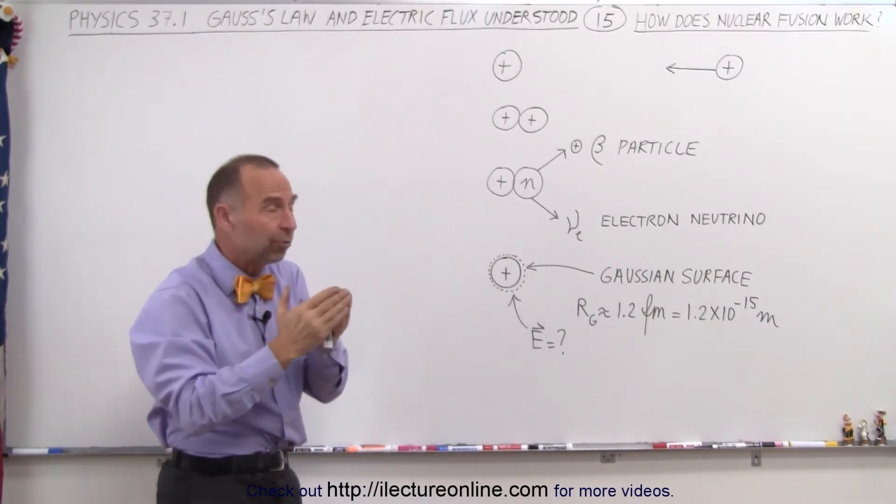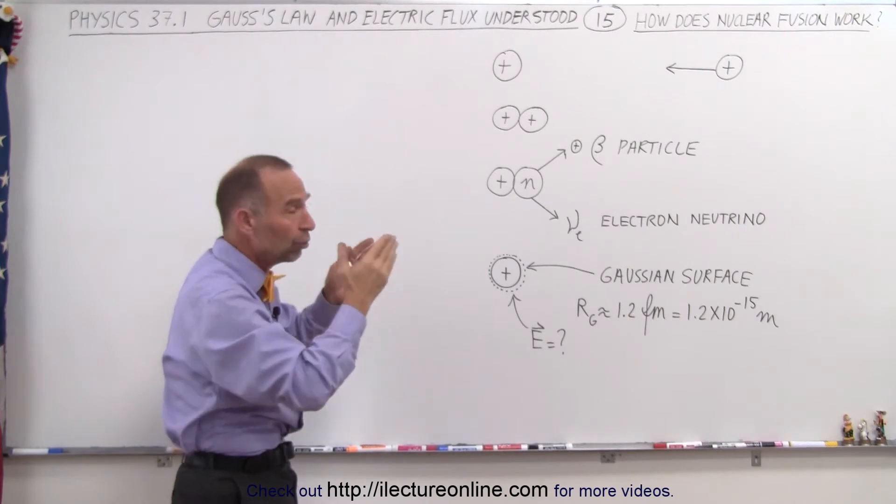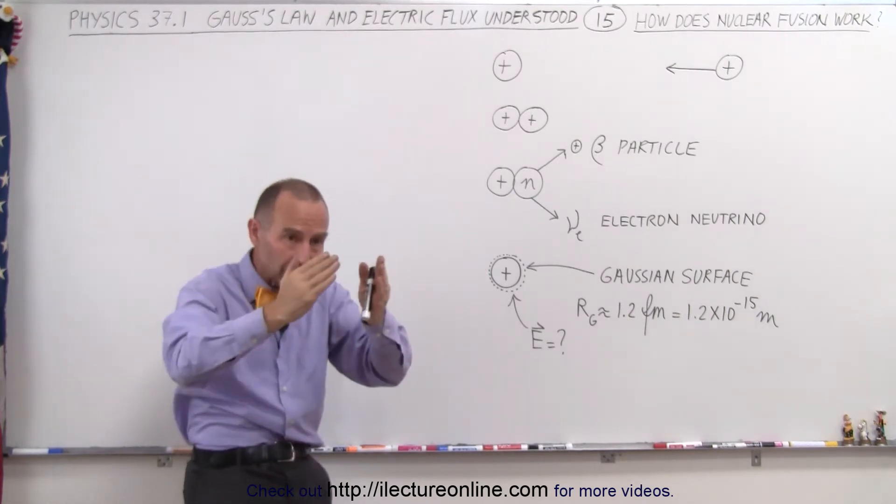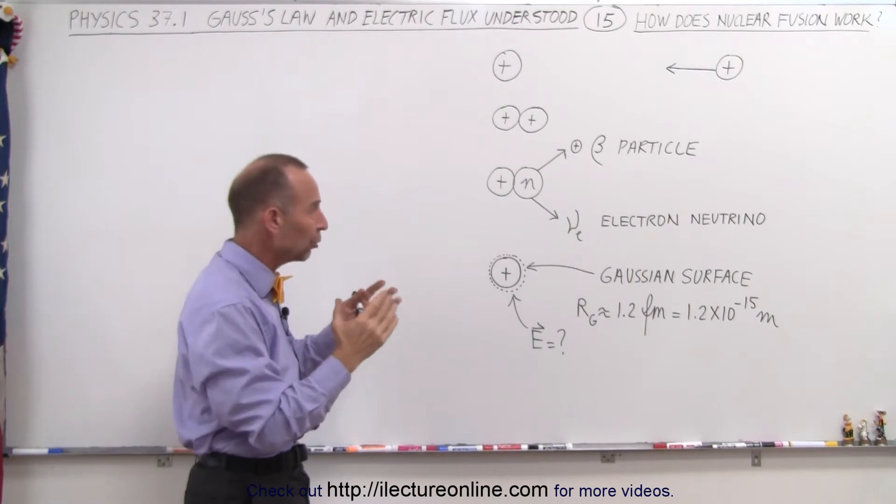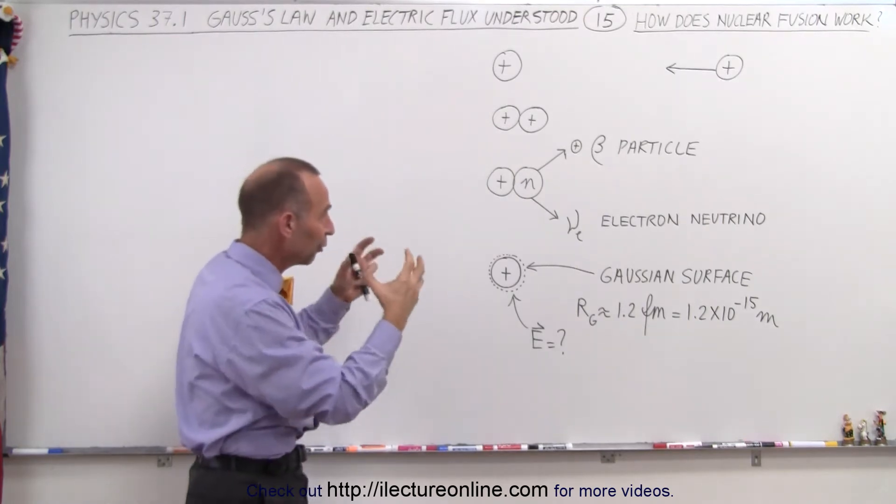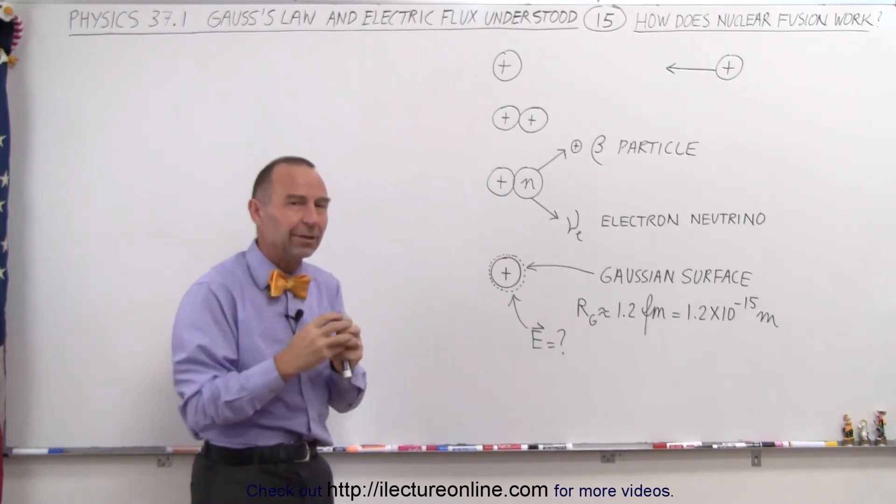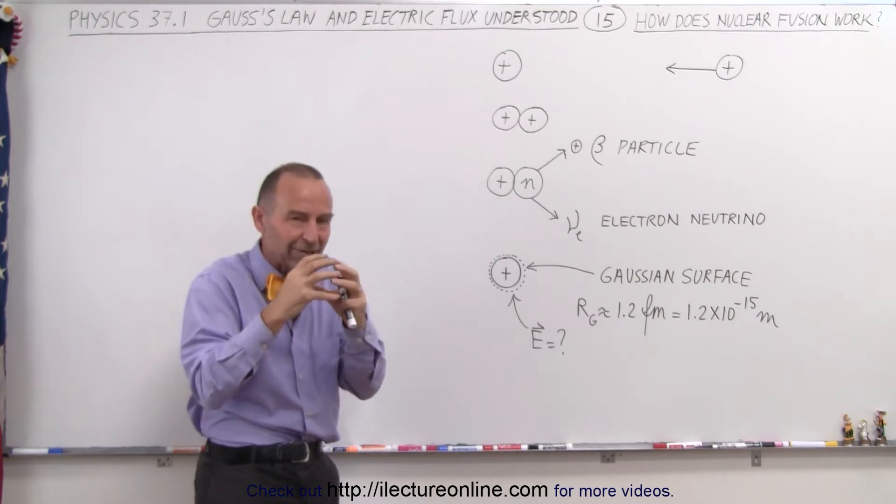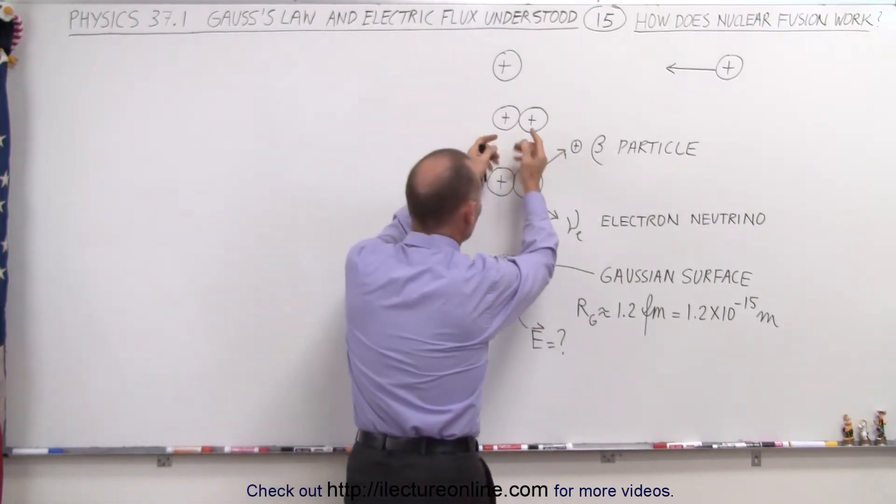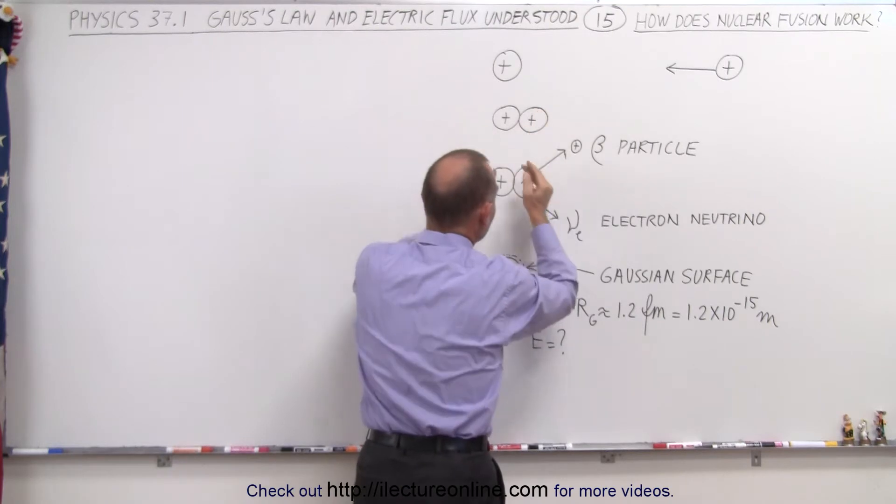Otherwise, the repulsive forces between the two protons will be so enormous that they simply get close, but then they get pushed away from each other by that enormous repulsive force before the nuclear strong force can hold them together. The nuclear strong force only acts at a very small distance, so they have to get close enough for the nuclear strong force to combine them.